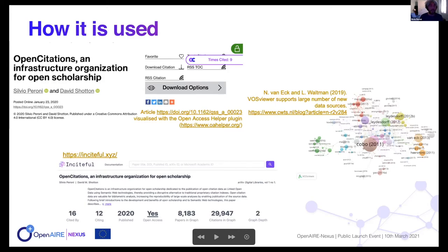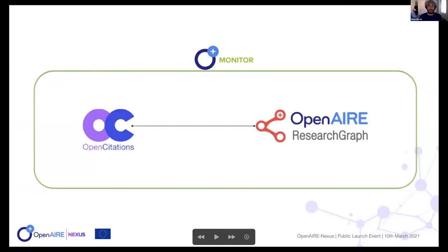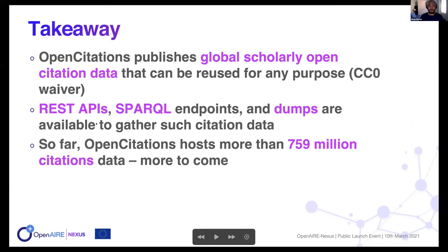Regarding our current position in the ecosystem: we are one of the additions that started thanks to OpenAIRE Nexus. Our closest relation will be with the OpenAIRE Research Graph, since we produce and expose a graph of article-to-article citations. Our most suitable position within the OpenAIRE Nexus project and within EOSC is close interaction with the OpenAIRE Research Graph, and through this interaction our data can be used by all the other services that have been presented.